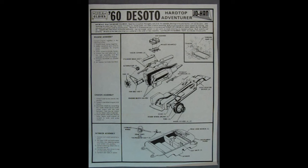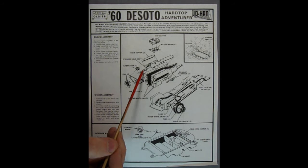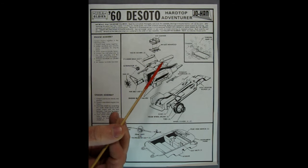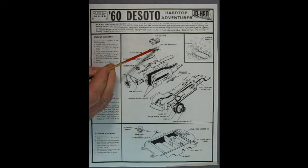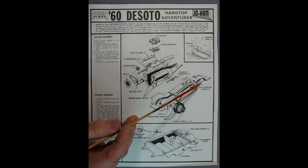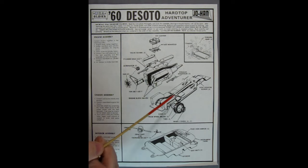Here we have side one of our instruction sheet for the USA Oldies 1960 DeSoto Hardtop Adventurer by Johan, a 1/25th scale plastic model kit. Here is our engine with right and left hand exhaust manifolds, cylinder heads, and the intake manifold or valley cover as one complete piece. The distributor is also molded in place. We have right and left hand side valve covers, intake manifold for dual carburetors, though we don't get dual carburetors, just the air cleaner.